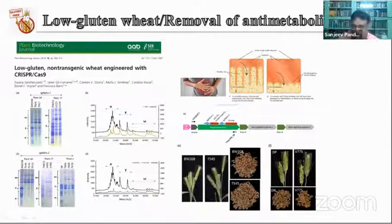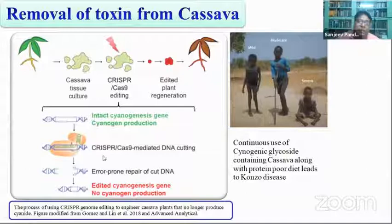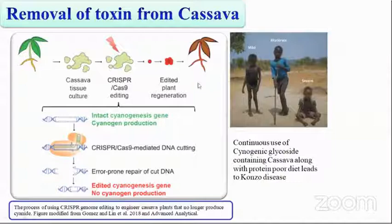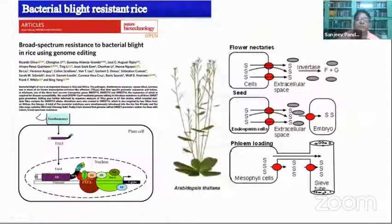The removal of toxin in cassava is another example. Cassava contains a cyanogenic glycoside toxin encoded by a certain gene, which was mutated by CRISPR-Cas9. This cyanogenic glycoside, when consumed regularly with a low-protein diet, causes a disease called Konzo, common in African countries. Converting cassava to a low-toxin variety was therefore an important development using CRISPR-Cas9 technology.